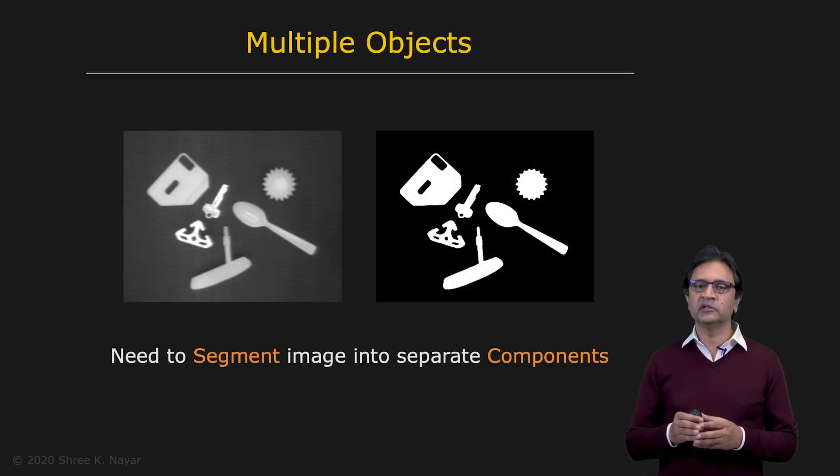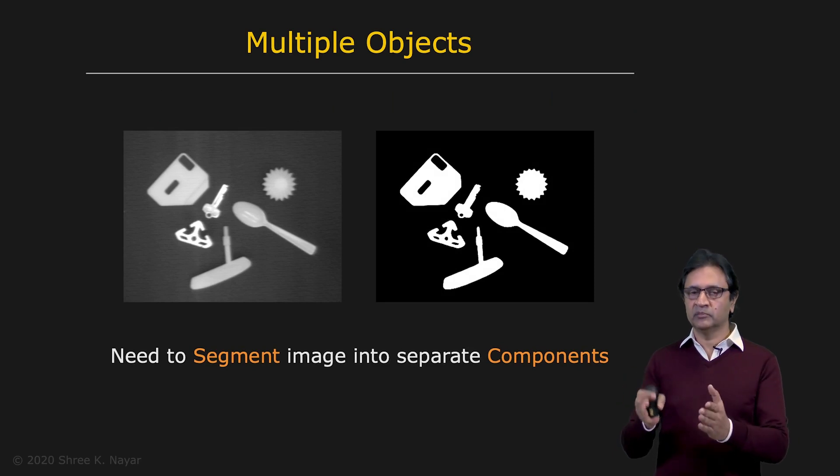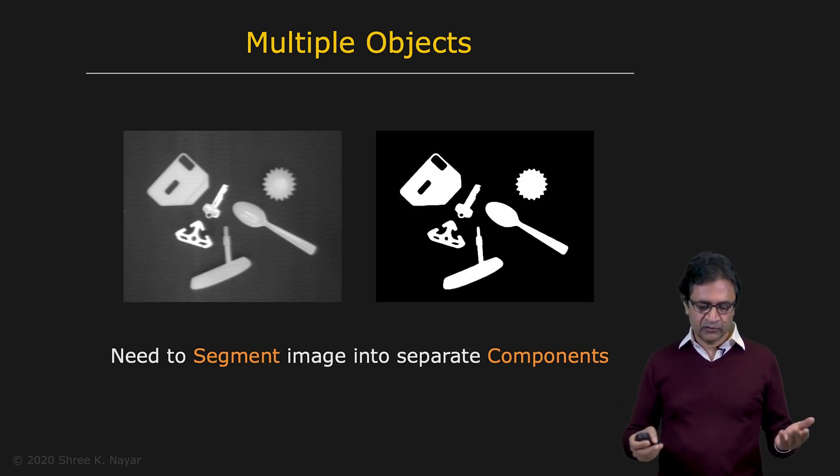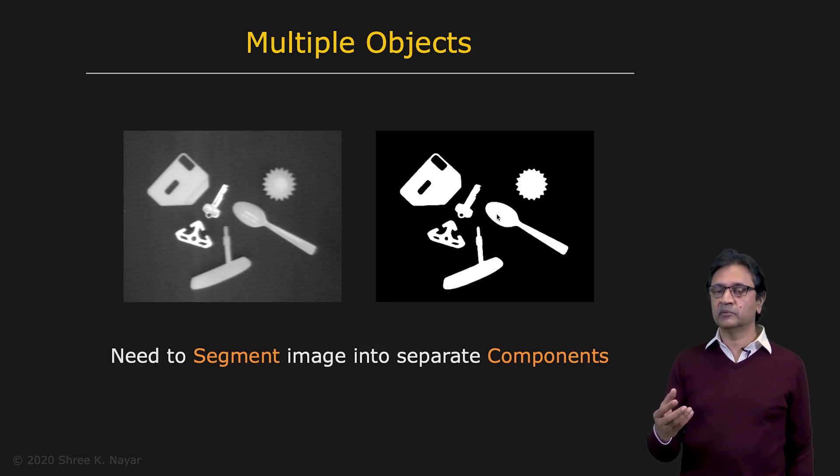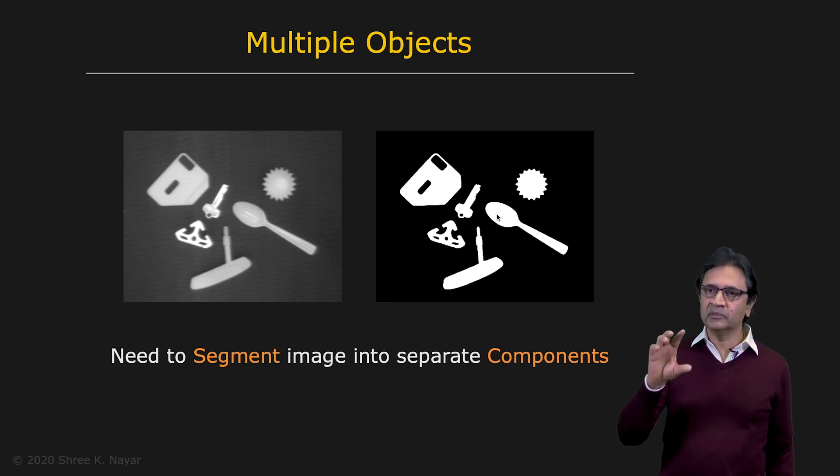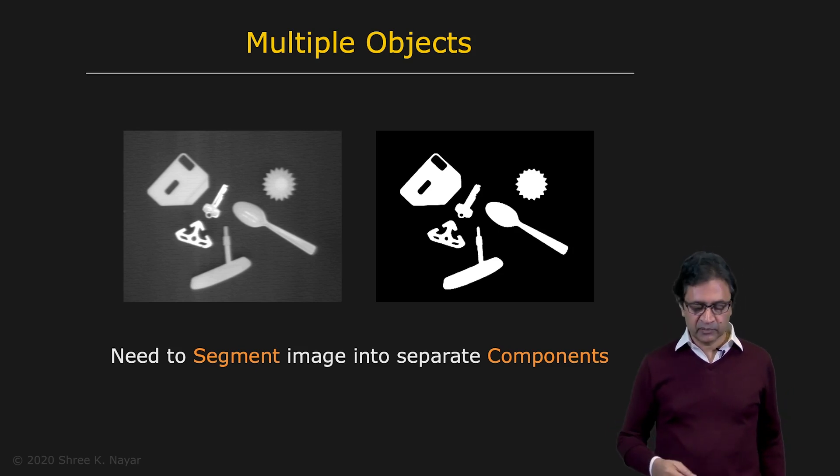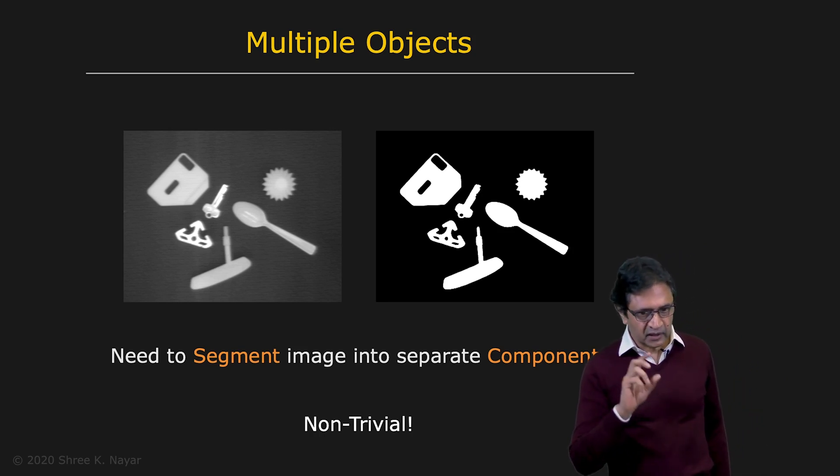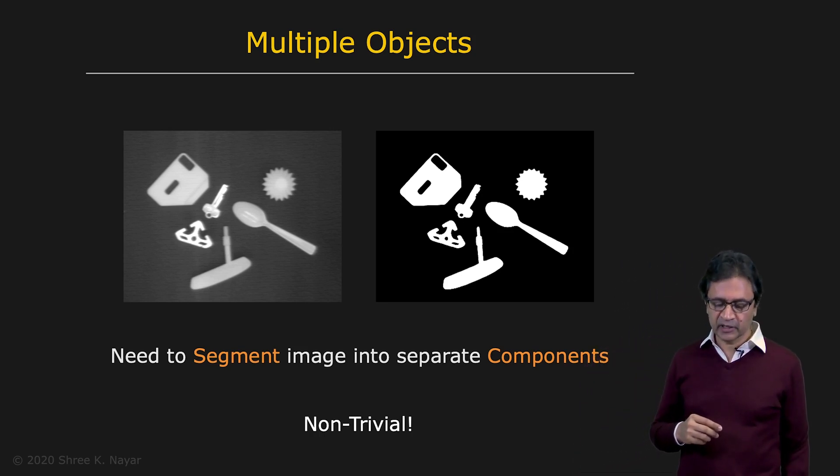Now, when we talked about geometric properties, we assumed that there was one object in the binary image. But of course, an image can have multiple objects. Here's an image, you threshold it, you get this binary image. Before we can compute our geometric properties, we want to be able to label each object as a different object. In other words, we want to segment the binary image. It's a very straightforward thing to do in one way, but it's not necessarily trivial. There are a couple of nuances we have to keep in mind when we do this.